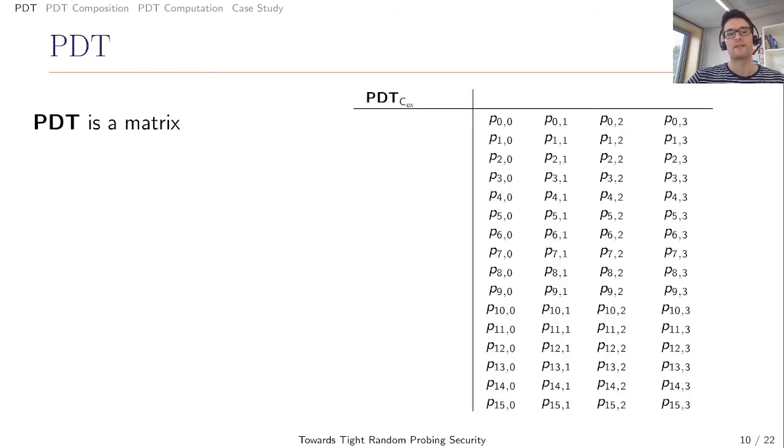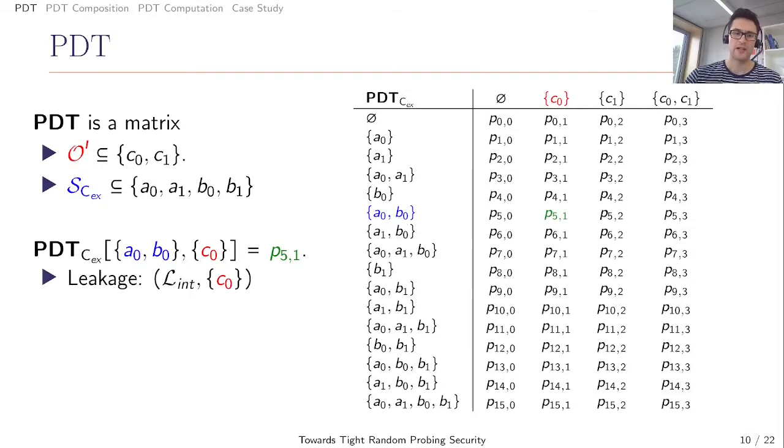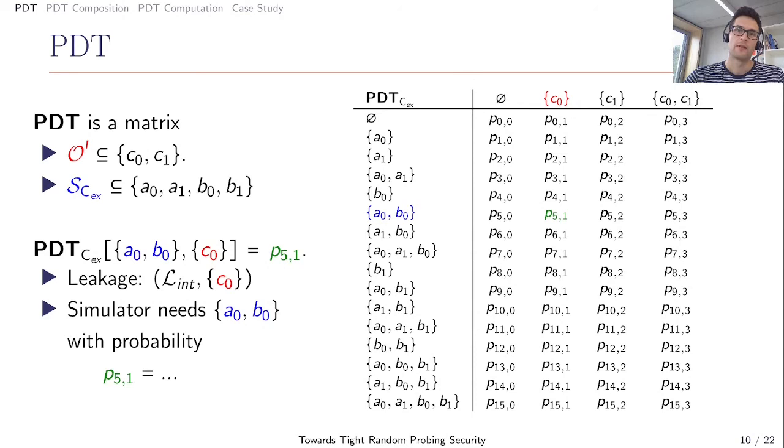In detail, our prop distribution table PDT is a matrix where each column represents a possible output leakage and each row represents a possible input values which the simulator might need. For example, the PDT CX of A0, B0 and C0 is P prime. This means that the leakage L prime and C0 can be simulated with A0 and B0 with a probability P prime. How to compute P prime we will explain after we have presented some PDT properties.